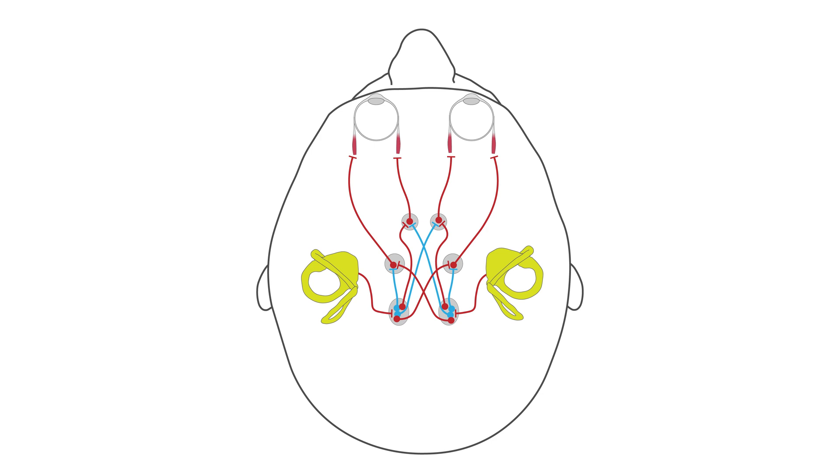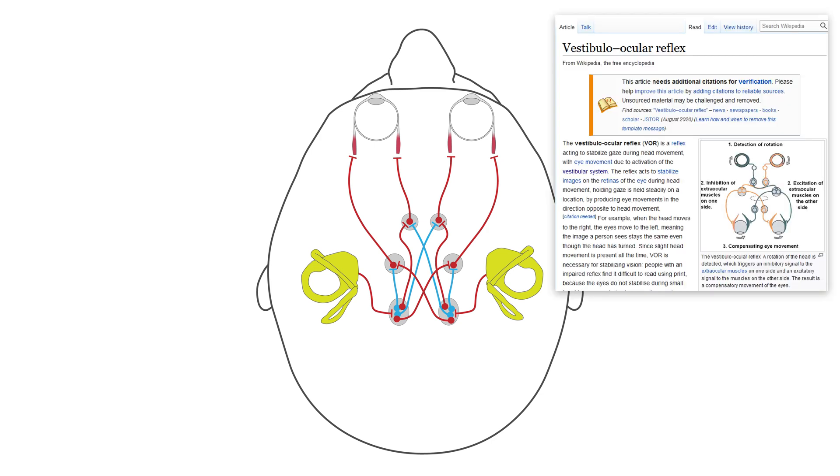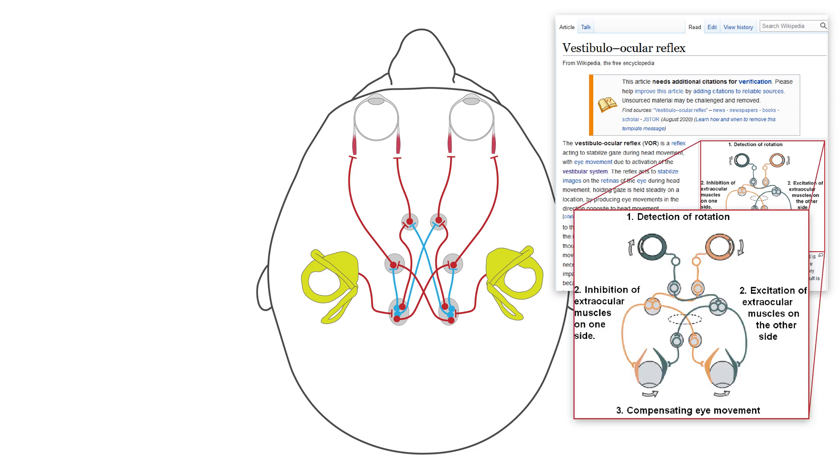Now, if you pull up the Wikipedia page for the vestibular ocular reflex, you'll see a slightly different wiring diagram for the same circuit, one that replaces this direct connection with this indirect one. And I've seen some textbooks and papers draw it one way, and some the other way, and it's kind of hard to tell which one's right.